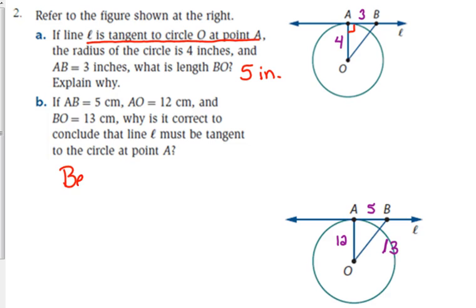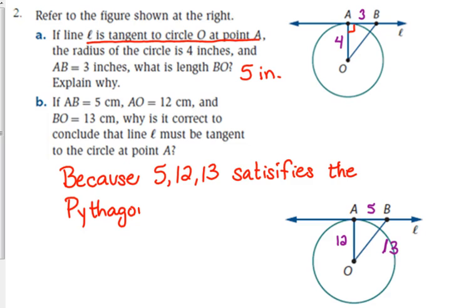So because 5, 12, 13 satisfies the Pythagorean Theorem. Because it satisfies the Pythagorean Theorem, that must be a right triangle. So if it's a right triangle, it's perpendicular, therefore it's tangent to the circle.